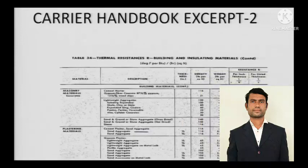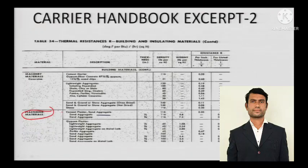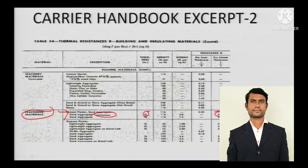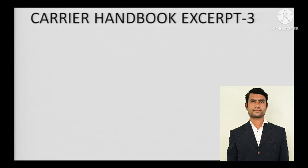This is the second page of the Carrier Handbook — not available in general textbooks. For thermal resistance of plastering materials, we look at cement plaster with sand aggregate. For half an inch of thickness, the resistance is 0.1. If it is 1 inch, multiply by 2, and so on. You multiply continuously by the appropriate factor to get the resistance for whatever plaster thickness is on your wall.